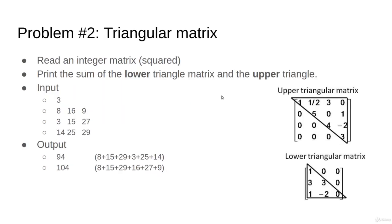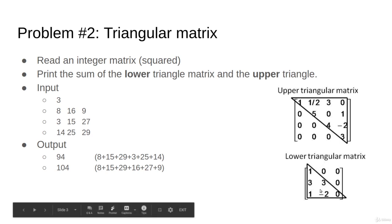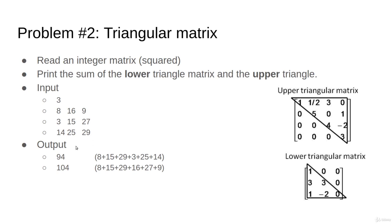Given a matrix, we call the upper triangular matrix a matrix passing from this diagonal here covering all of these values. The lower triangle is also the diagonal with all the lower values. You will read the matrix here and print the sum of the lower triangle matrix and the upper triangle matrix, which are here 94 and 104.